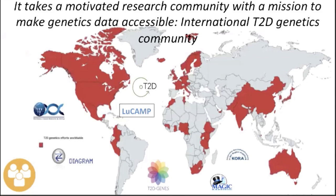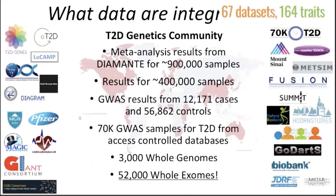There are four types of data in the Knowledge Portal. The first are data from the diabetes genetics community. Highlights include about one million samples that you can query from a genome-wide association study meta-analysis in Europeans called Diamante. There are another 400,000 samples from SNPs in coding regions of the genome. Beyond genotype data, there are whole genomes — if you want to survey the entire allelic spectrum for types of diabetes, there are 3,000 genomes. And a remarkable new dataset just published on the knowledge portal: 52,000 whole exomes of types of diabetes that you can query, soon to be the subject of a Nature publication.